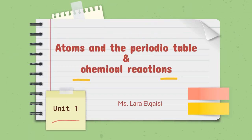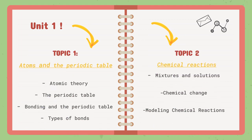Hello, Grade 8 students, and welcome to the first unit in this course. It is called Atoms and the Periodic Table and Chemical Reactions. In this unit we have two topics. The first topic is Atoms and the Periodic Table, which includes the following lessons: atomic theory, the periodic table, bonding and the periodic table, and types of bonds. Topic 2 is Chemical Reactions, which includes the lessons: mixtures and solutions, chemical change, and modeling chemical reactions.